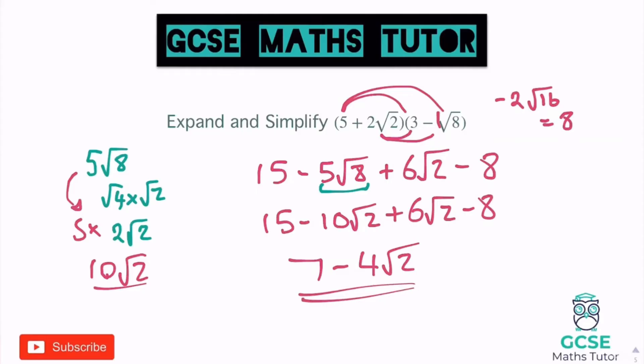Slightly harder there — there are little bits where we've got to be careful to simplify. But there are hints, like spotting the root 8 to start with, that there's going to be some simplifying going on. Some slightly different things can appear in these questions.